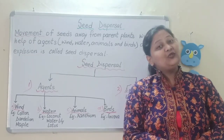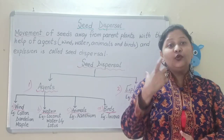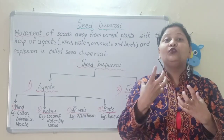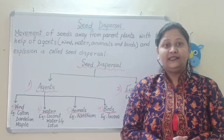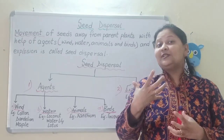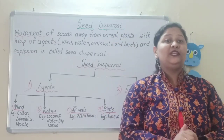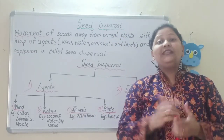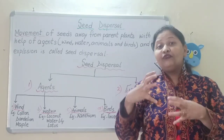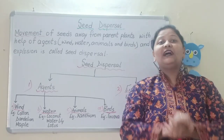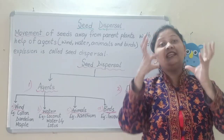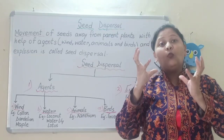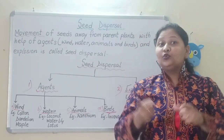Now, coming to ovule — ovule develops into seeds; ovule becomes seed. And after that, the dispersal process takes place, which I am going to explain in today's session. Coming to the ovary part, ovary enlarges to become fruit. Yes, the ovary enlarges to become fruit and the ovarian wall becomes the fruit wall.